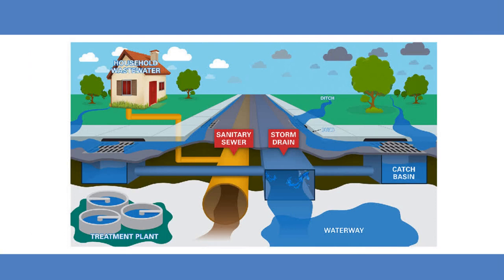Illicit discharge can include trash and unwanted furniture or appliances dumped in ditches, wastewater from steam cleaning or power washing companies, construction materials such as drywall mud and concrete from small projects, grass and lawn care clippings, and chlorinated pool water.